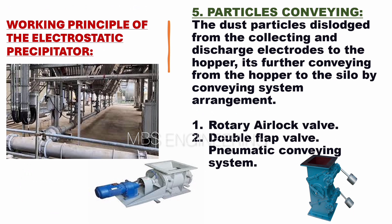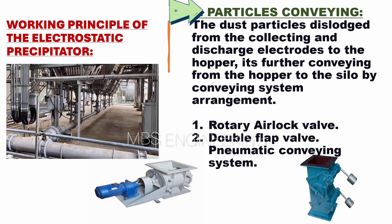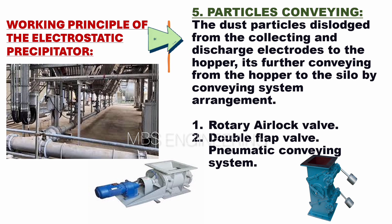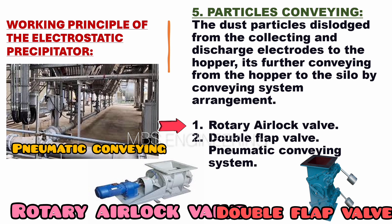The sixth step of the electrostatic precipitator's working principle is particle conveying. The dust particles are dislodged from the collecting and discharge electrodes to the hopper, and further conveyed from the hopper to the silo by the conveying system. The dust disposal arrangements used include: the rotary air lock valve, the double flap valve, and the pneumatic conveying system.